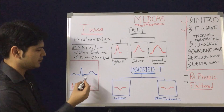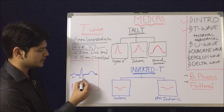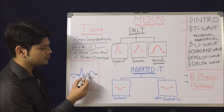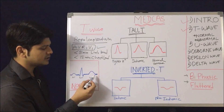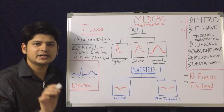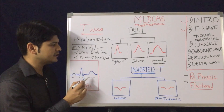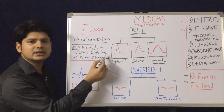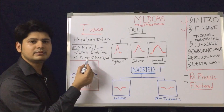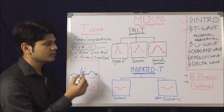Here is an example of normal morphology of the T wave. This is the QRS complex and this is the T wave. The T wave should be upright, except in lead V1 and AVR where it can be inverted normally. T wave amplitude should be less than 5 mm in the limb leads and less than 15 mm in the chest leads. So this is about your normal T wave.